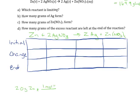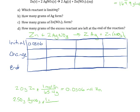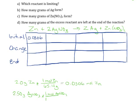I know that one mole of zinc metal weighs 65.4 grams, which tells me that I have 0.0306 moles of zinc. Then I'm going to do the same thing for the silver nitrate. I know that I'm starting with 2.50 grams of silver nitrate. I know that every mole of silver nitrate weighs 169.9 grams, which gives me 0.0147 moles of silver nitrate.